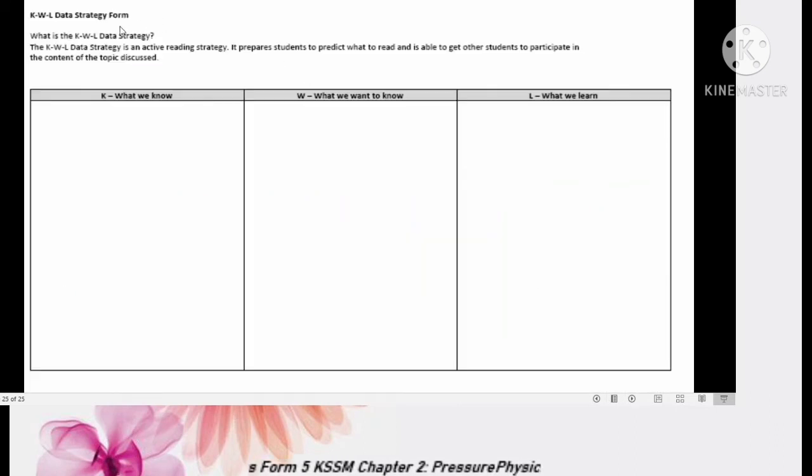About the KWL chart, they have three columns. K means knowledge or what you know. Just write down before you carry out the project what you know about pressure and liquid. When you want to start the project, W means what we want to know, what you want to know more about the project, what you want to find from the website on this, or how to find the knowledge regarding this project. After you have done the project, L means what we learn, meaning you write down what is your new knowledge that you gain from this project.